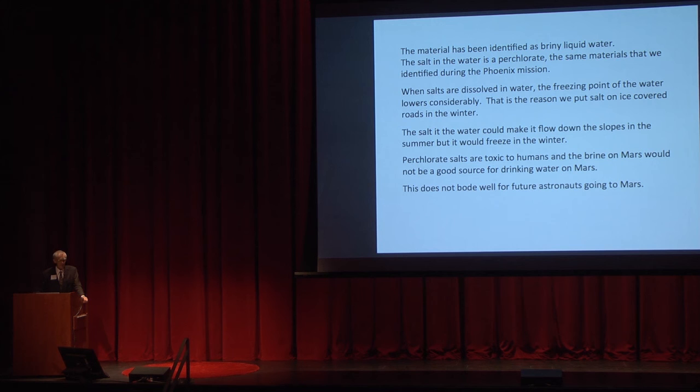However, the perchlorate salts are toxic to humans. They could not drink water with those salts in it, particularly perchlorates. And so they would not be a good source for drinking water on Mars. So this does not bode well for astronauts that might be going to Mars in the 2020s or 30s or 40s, whenever it's possibly planned that people would go to Mars. There would have to be another source for drinking water on Mars. But this stuff wouldn't work very well.